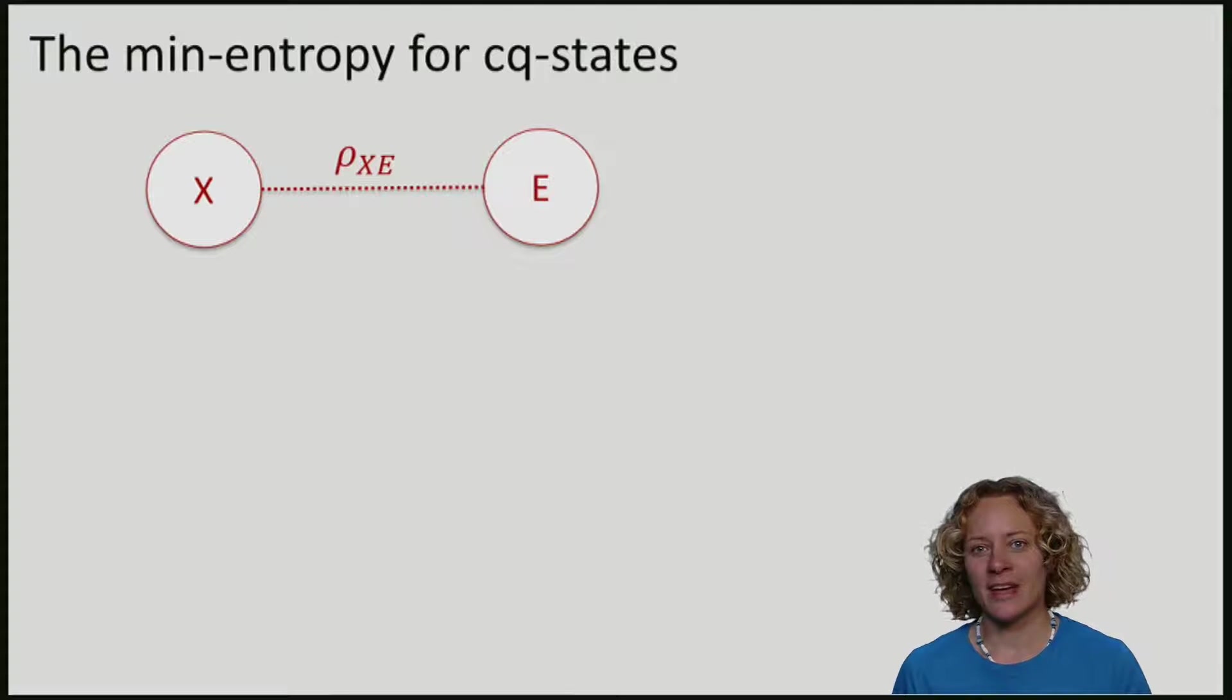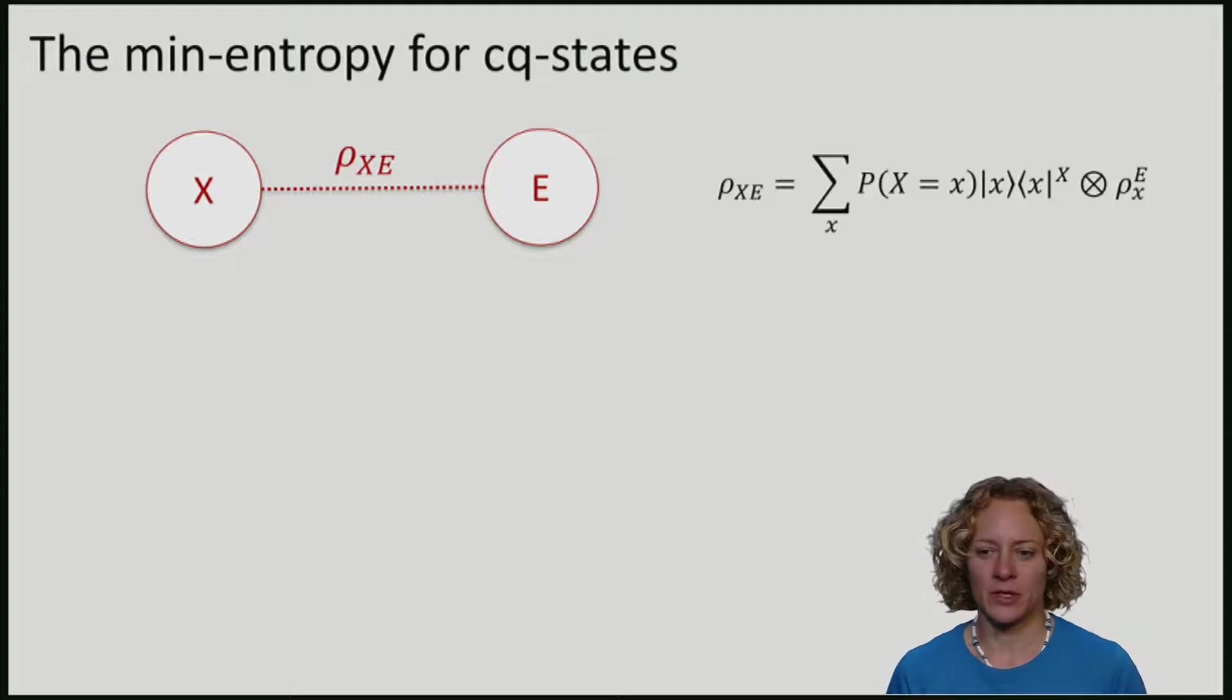In this case, if we have the min-entropy about the classical string, the joint state between x and e that Eve might have is a cq state, rho_XE. It looks like this. It's classical on x, and there's some quantum state on e depending on the choice of x.